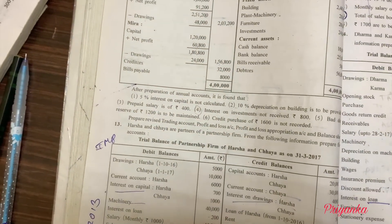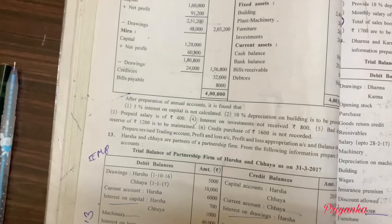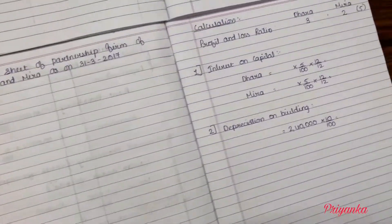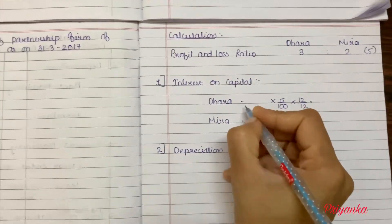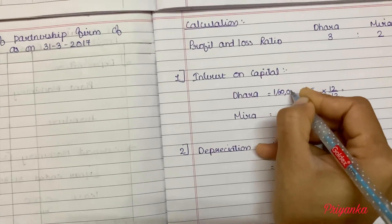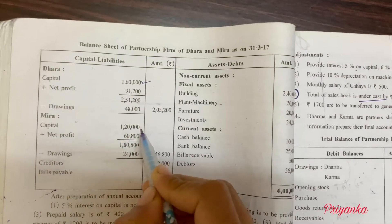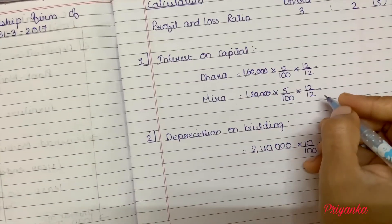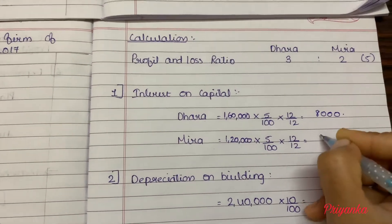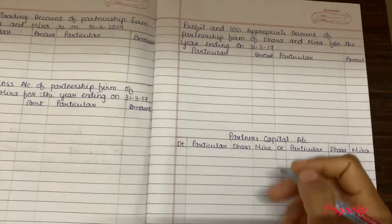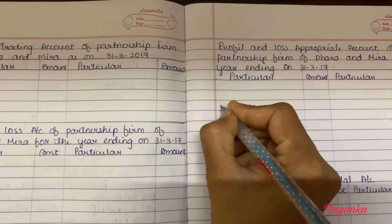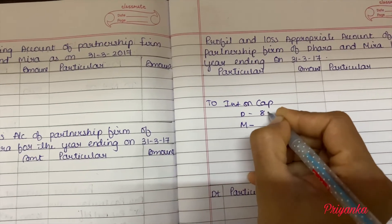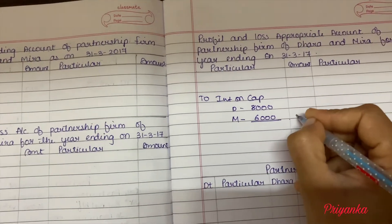Here we can see the five percent interest on capital is not calculated. Take the capital — don't take this amount, take one lakh sixty thousand. So for Dhara it is one lakh sixty thousand and for Mira one lakh twenty thousand. Making the calculation, Dhara's interest on capital is eight thousand and Mira's is six thousand. This will be passed in the profit and loss appropriation and partners capital accounts. Interest on capital, writing in short, is fourteen thousand.